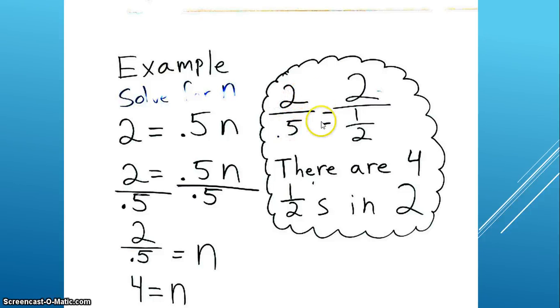2 over 0.5 is equal to 2 over 1 half, which is asking us how many 1 halves are in 2. There are 4 halves in 2, so 2 over 0.5 equals 4, which equals N. And that is it for tonight's video.